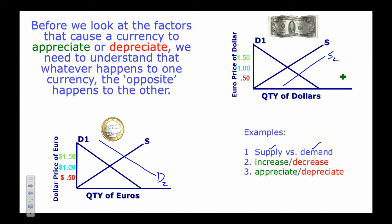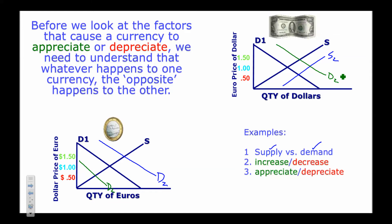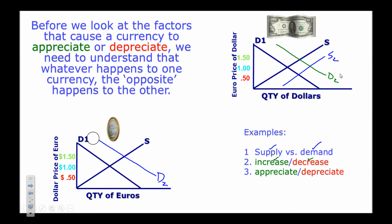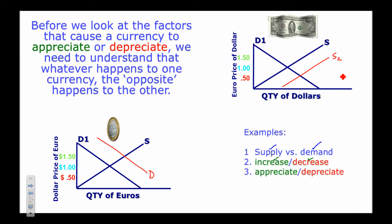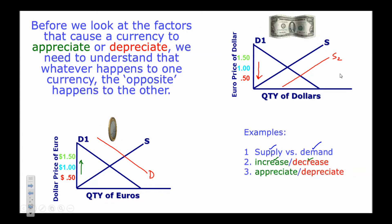Another scenario: if a Canadian decides to vacation in the USA instead of Europe, they demand US dollars but demand fewer euros. So demand increased for one currency but decreased for the other. The key rule: when two currencies are compared, if the value of one increases, the value of the other decreases — the dollar depreciates when the euro appreciates, and vice versa.